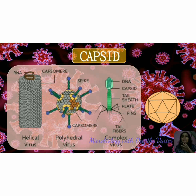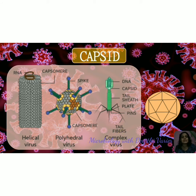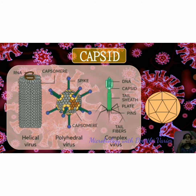The capsid is completely made up of proteins, while the genetic material is completely made up of nucleic acids. These proteins forming the capsid are arranged in a particular symmetry. Based on the symmetry of the capsid we have three types: the first is helical symmetry, the second is polyhedral or icosahedral symmetry, and the third is complex symmetry. The symmetry of the capsid is very important because it determines the shape of the virus. Helical symmetry is when the capsomeres are coiled or twisted around an imaginary axis.